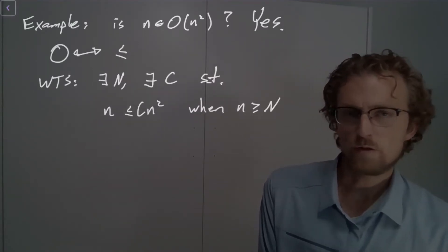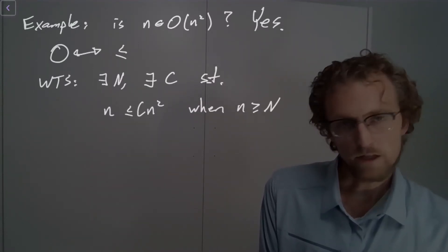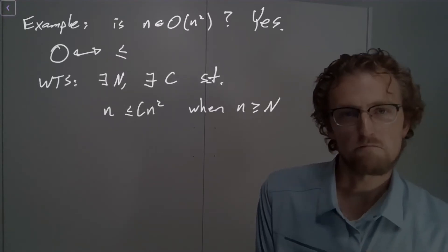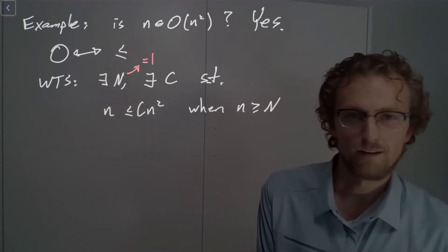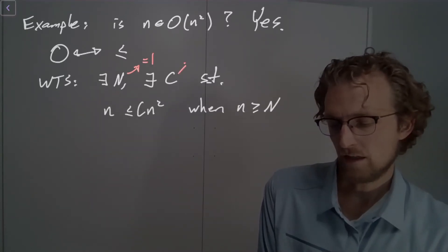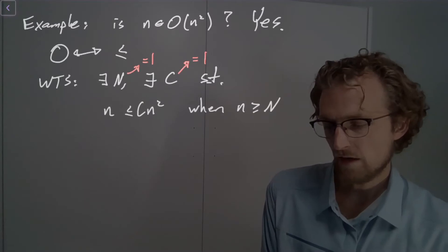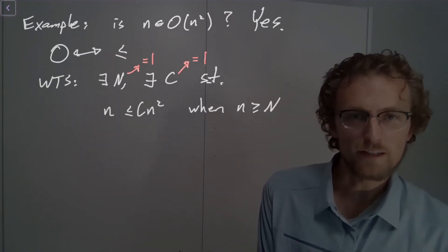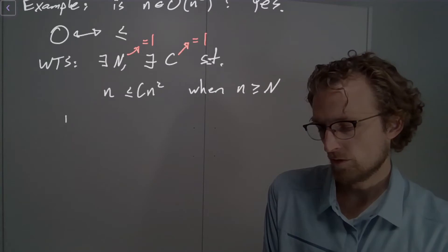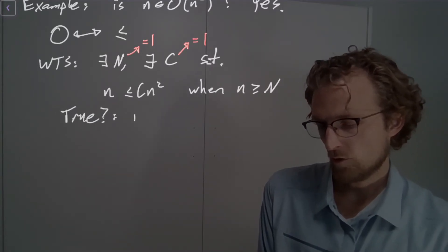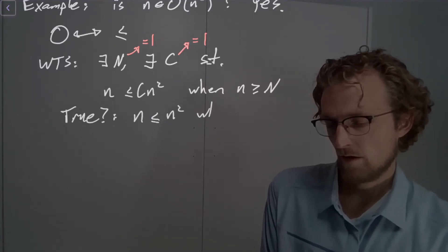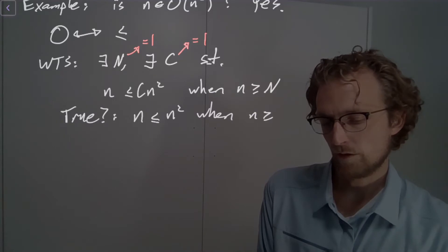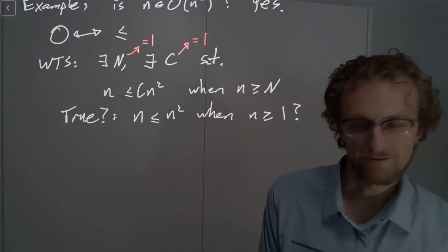When n is greater than or equal to big N. Well, with this one, the answer is really easy, because it turns out that we can choose big N to be one, and we can choose c to be equal to one. Why is that? Well, let's just plug those in and see. So I can ask, is this true?